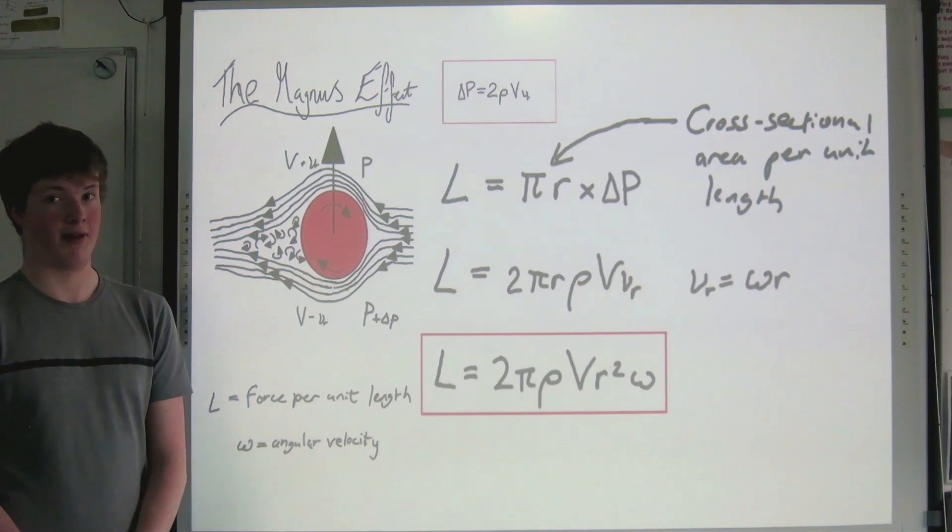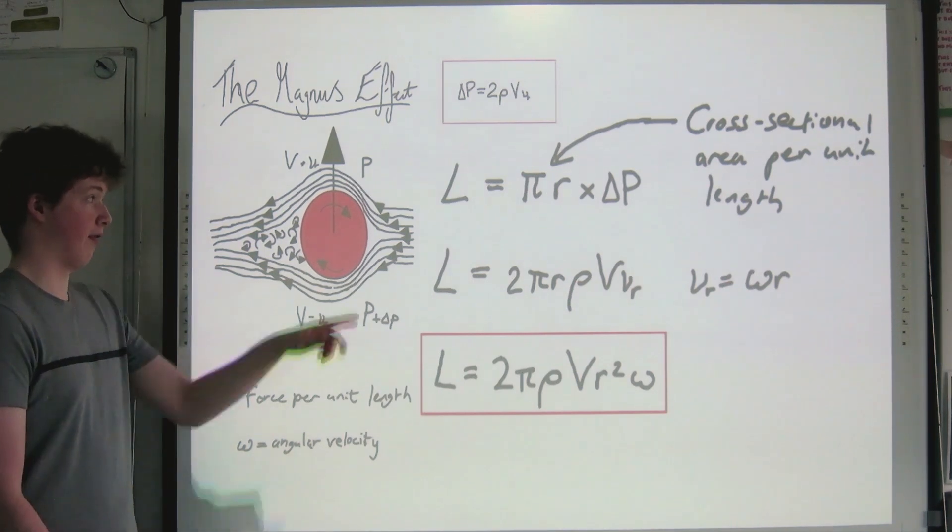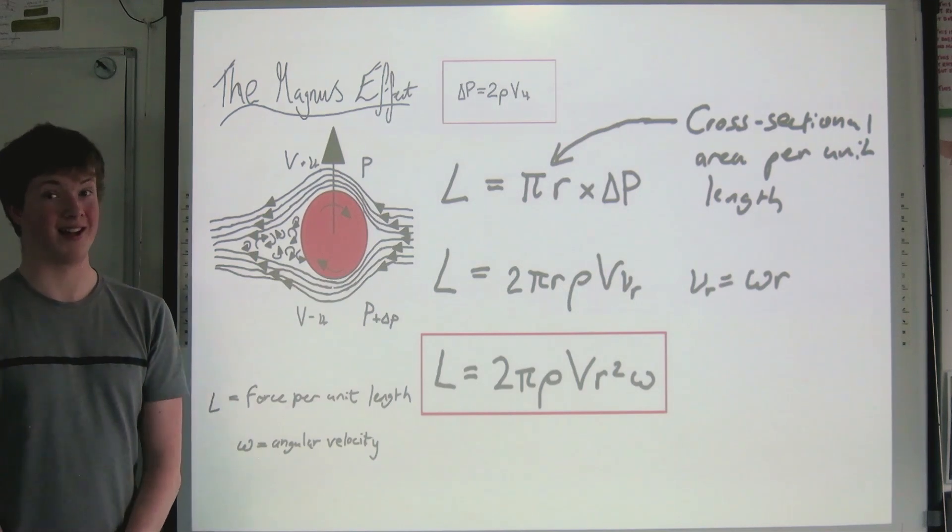There are many limitations to this method, as we've assumed the flow is laminar, apart from the turbulent boundary layer, when in fact it isn't. This method only really gives us the fact that there is a force rather than the magnitude of one.